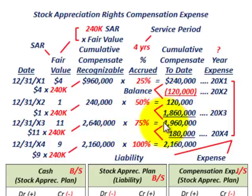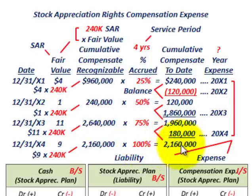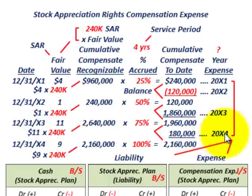For year 20X3, we had to add $1,860,000 to the prior balance of $120,000 to reach $1,960,000 — that's our compensation expense recognized for 20X3. For 20X4, starting at $1,960,000, we add $200,000 to reach $2,160,000 — that's the incremental compensation expense for year 20X4. This completes our yearly expense calculation for years 20X1 through 20X4.